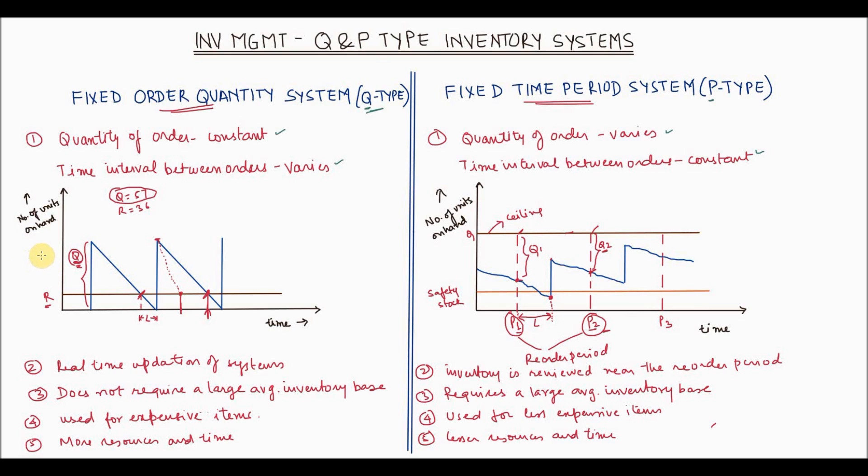For this basic fixed order quantity model, let's say the demand of the item is constant. Based on the demand being constant, Q is the quantity that has been determined to be ordered from the supplier or vendor, and R is established as the reorder point.